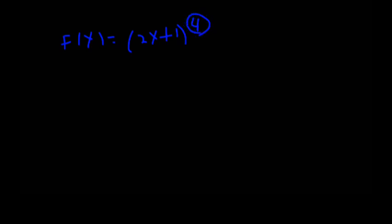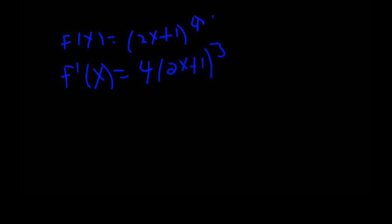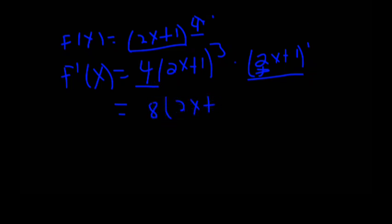Using the chain rule, the derivative of (2x plus 1) to the power of 4: bring down the power, multiply by the derivative of the inner function. The derivative of the linear function gives coefficient 2, so the result is 4 times (2x plus 1) cubed times 2.